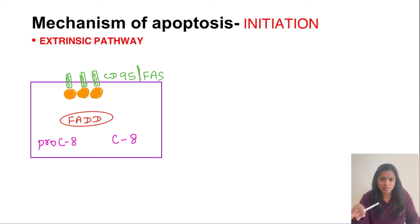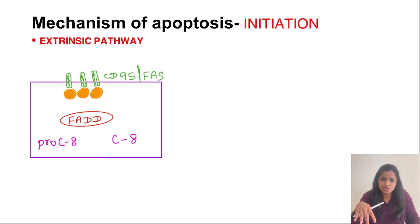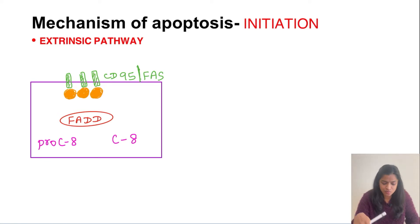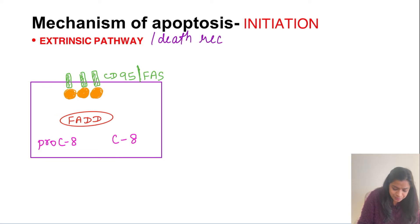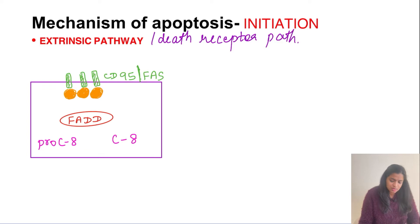In today's video we will be discussing the mechanisms of apoptosis. Apoptosis involves two phases: the initiation mechanism, which then leads to the execution phase. Initiation is subclassified into the intrinsic pathway and the extrinsic pathway. We will first deal with the extrinsic pathway, which is also called the death receptor pathway.